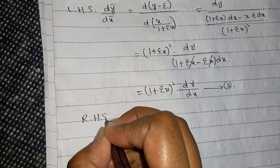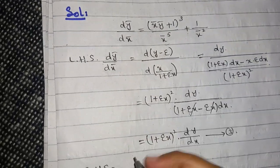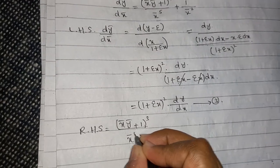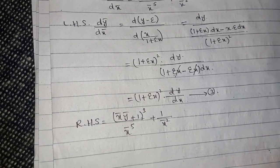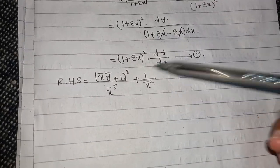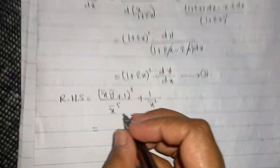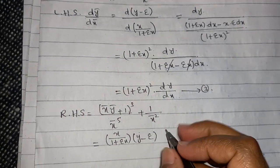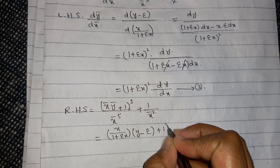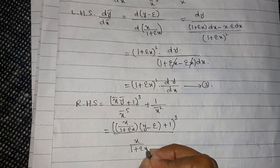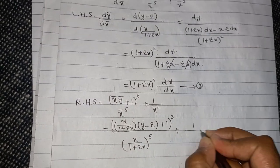Now take the right-hand side: x_bar * (y_bar plus 1)^3 divided by x_bar^5 plus 1 over x_bar squared. Substituting x_bar = x over (1 plus epsilon*x) and y_bar = y minus epsilon, we get x over (1 plus epsilon*x) times (y minus epsilon plus 1)^3 divided by (x over (1 plus epsilon*x))^5 plus 1 over x_bar squared.